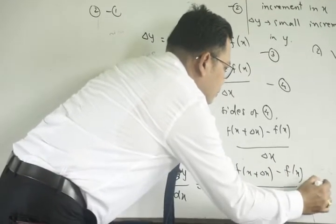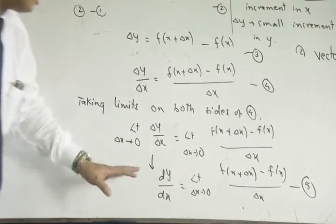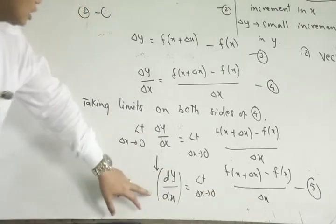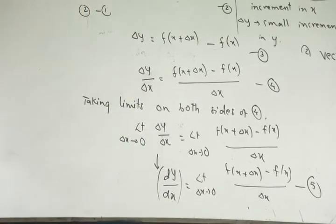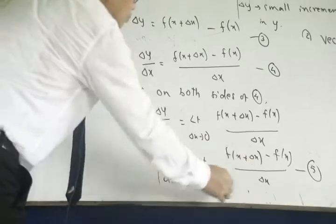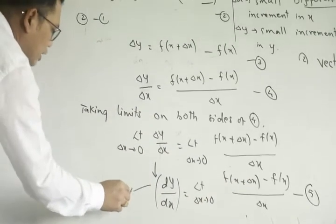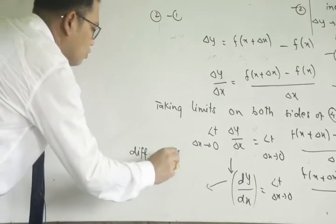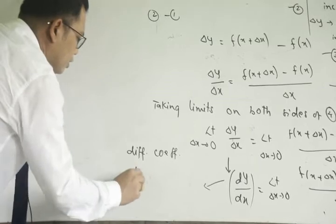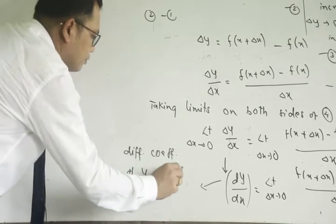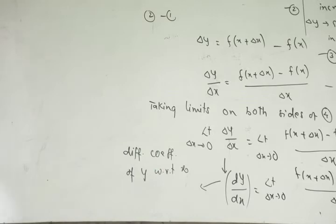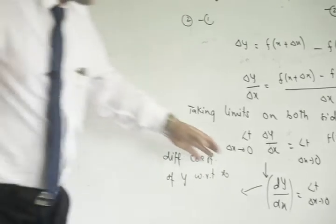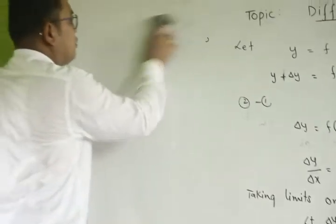This represents the derivative. In the limiting case, we call this the differential coefficient of y with respect to x. In physics, why do we study these types of things? They are highly relevant in physics.